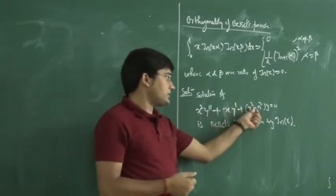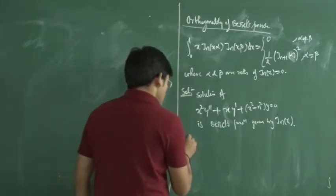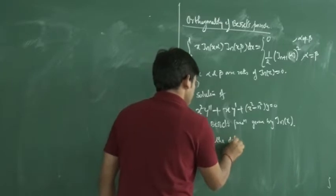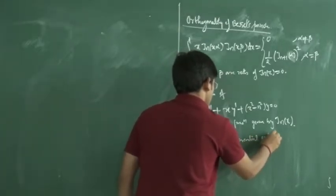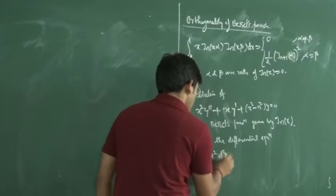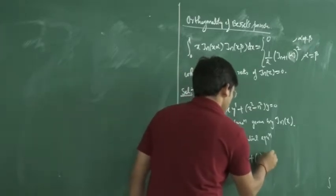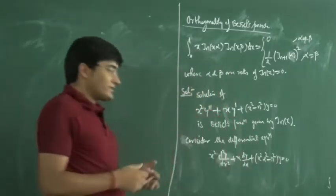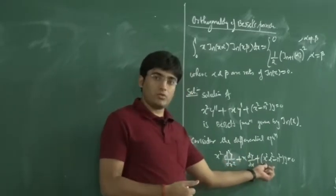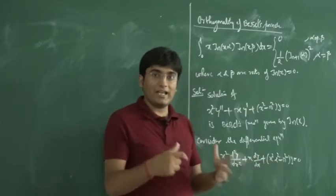Now what happens when x is replaced by xα? Let us consider the differential equation x²(d²y/dx²) + x(dy/dx) + (x²α² − n²)y = 0. I will show that the solution of this differential equation is Jn(xα).